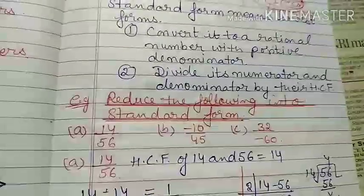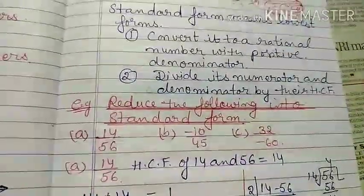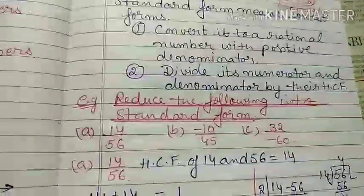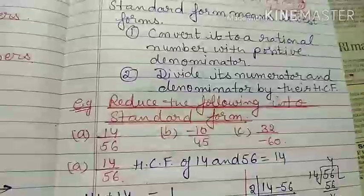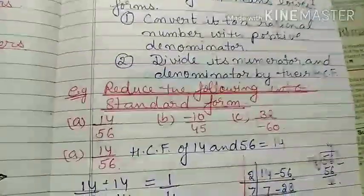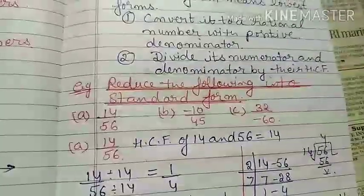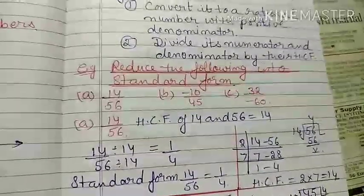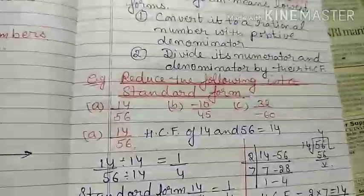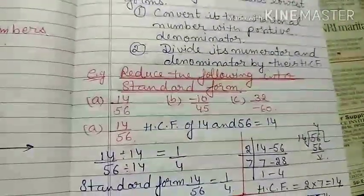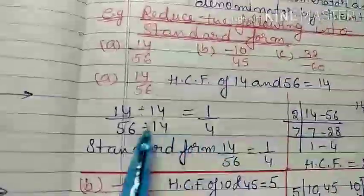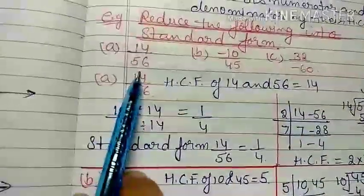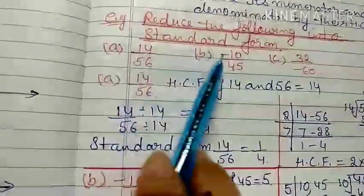Now, rational numbers in standard form. The question is: how do you reduce a fraction to lowest form? It doesn't matter if it is a negative or positive rational number. The main thing is: if any rational number has a negative denominator, make it positive first. Then we divide numerator and denominator by the HCF. For example, consider 14 by 56.